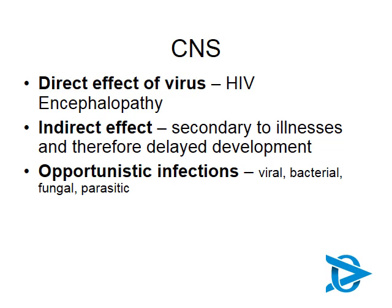There are also specific opportunistic infections that can damage the central nervous system — viral, bacterial, fungal, and parasitic. The lower the CD4 count is, the wider the range of organisms that can attack the central nervous system. And finally, we do sometimes see neoplasia. In children with HIV, one of the carcinomas related to that is lymphoma.